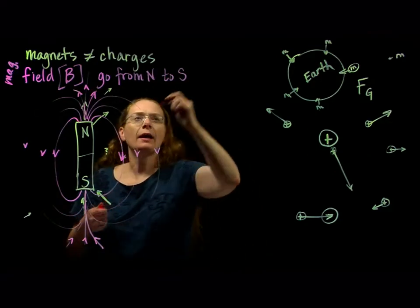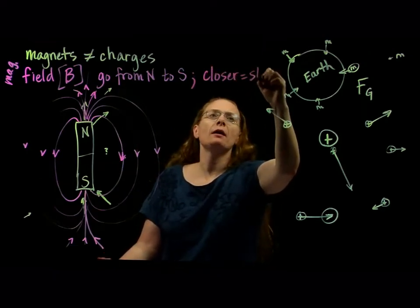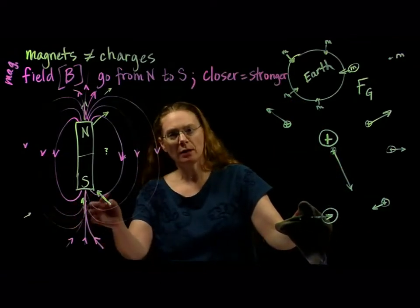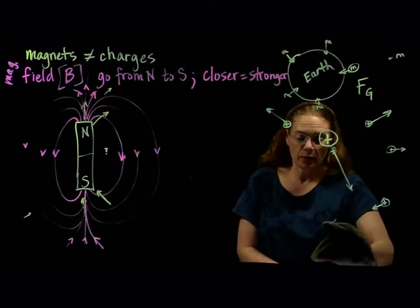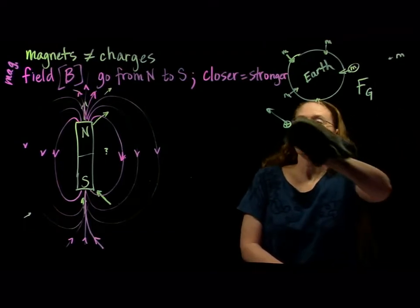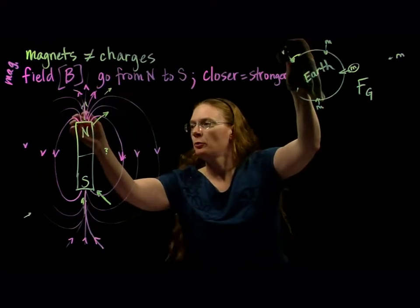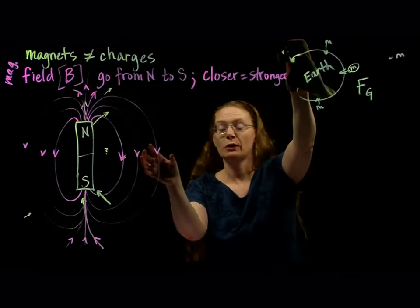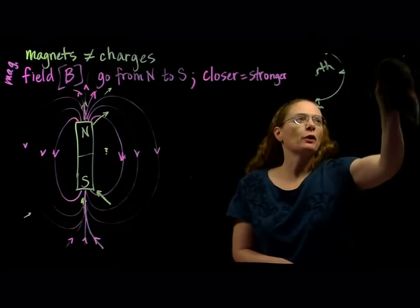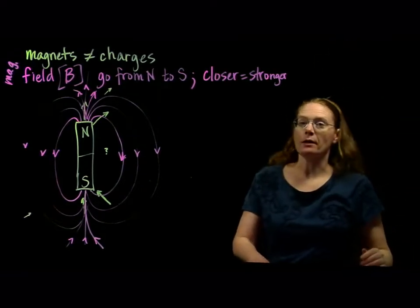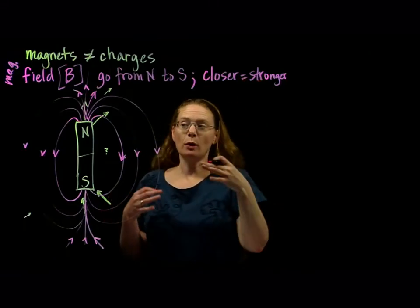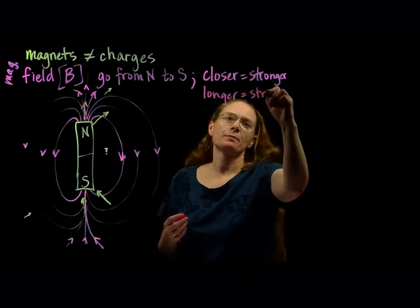They go from north to south, and closer together means the field is stronger. When we have field lines that are really close together, you can see there are a whole bunch of lines right here close together — that means a very strong magnetic field. That should make sense from what you know about magnets: the magnetic force is stronger the closer you get. Close up, a lot of lines in a small space — strong. Out here, very few lines in the space — weaker field. If you want to do vectors, they still point from north to south, but longer vector means a stronger force.